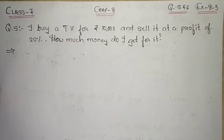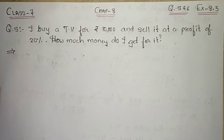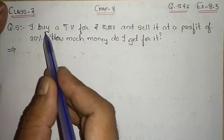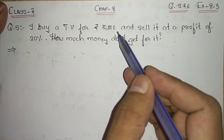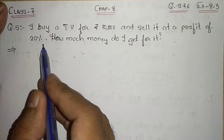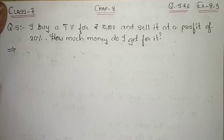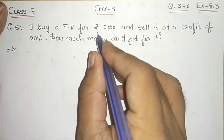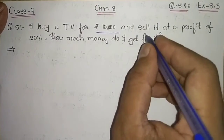Good morning students, today we are going to solve question number 5 and 6 of Exercise 8.3. Question number 5 says: I buy a TV for rupees 10,000 and sell it at a profit of 20 percent. How much money do I get for it? I have bought one TV whose cost price is 10,000.